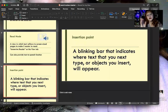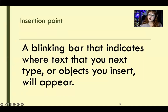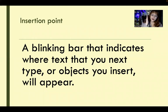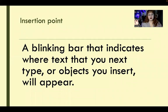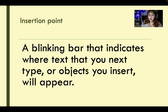An insertion point is the flashing bar in front of your text. When you click on an empty space, you get that flashing line, or if you're typing, there's a flashing line going in front of everything you type — that's your insertion point. This applies to typing, but also if you're going to insert an object like a picture, it will appear where your insertion point is.